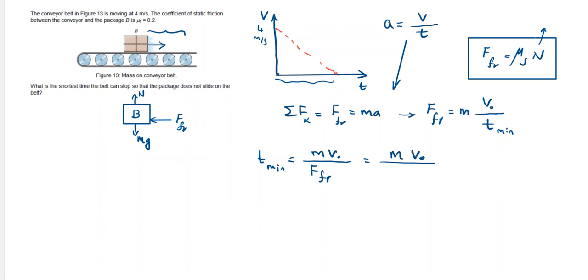So we write that F of friction is μs times N, equal to μs times mg. Substitute: t minimum equals m times v naught over μs mg, and the m's cancel out. So the minimum time is equal to v naught over μs g, which is 4 over 0.2 times 9.81, and the final answer would be 2.05 seconds.